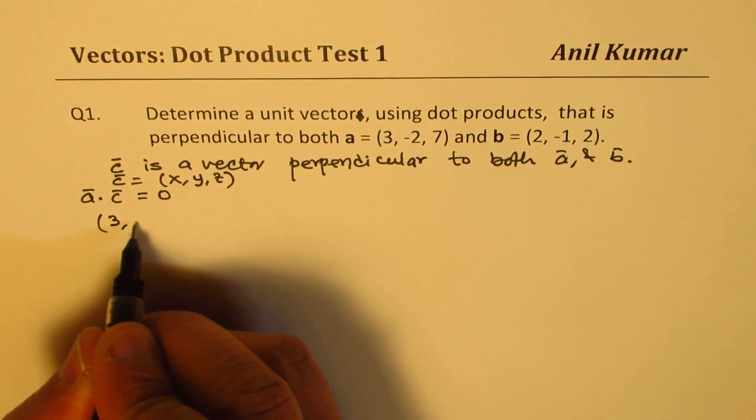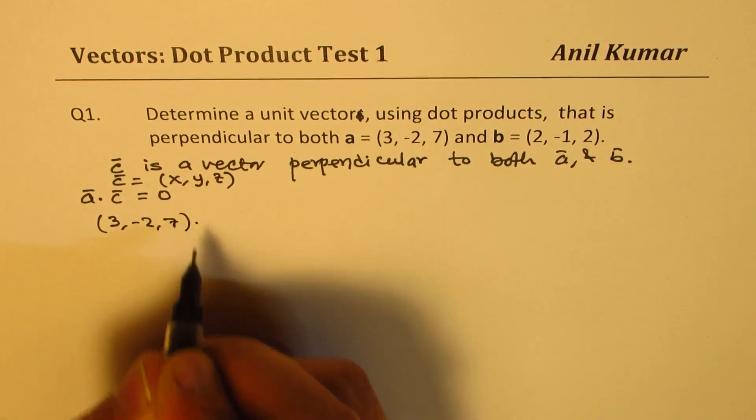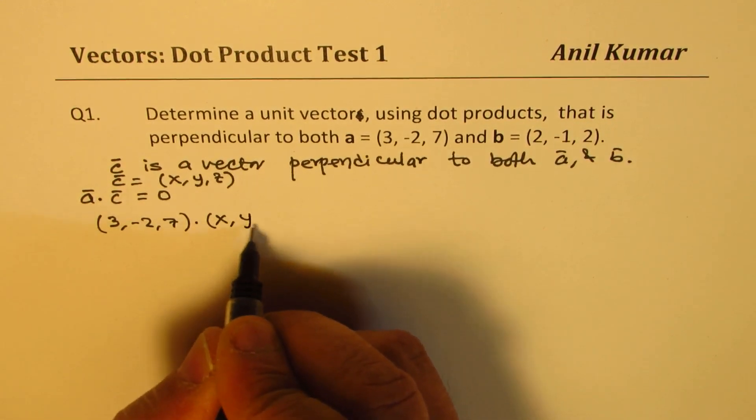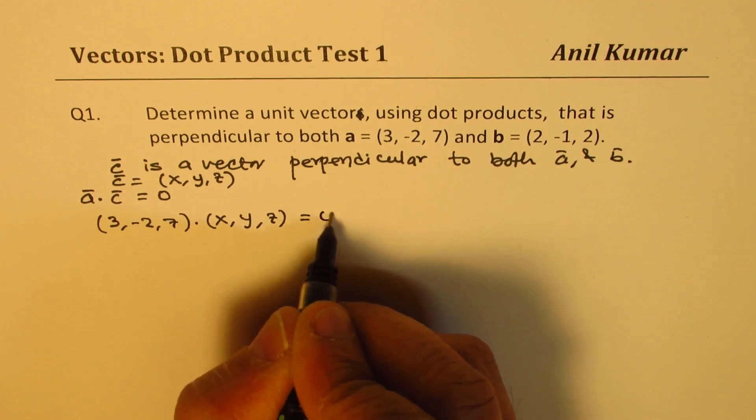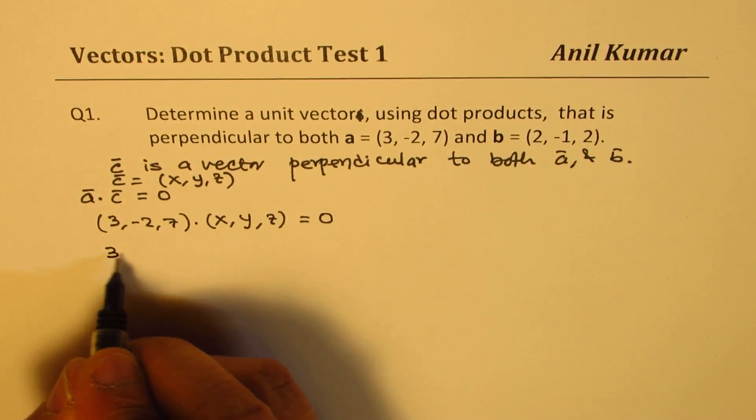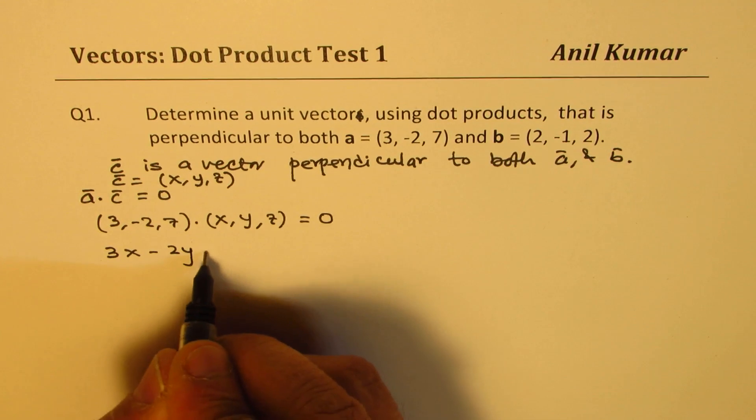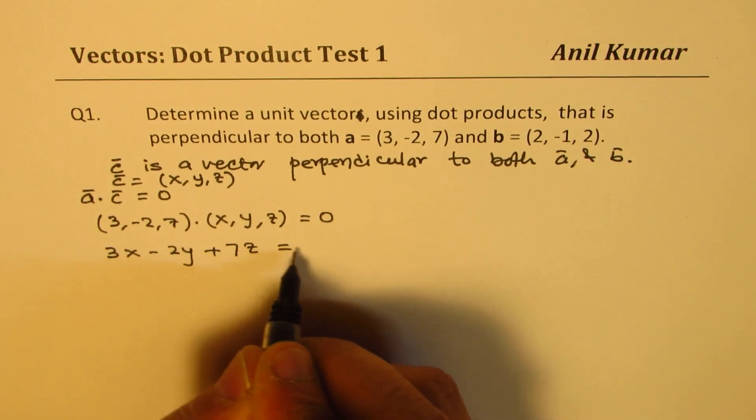That is to say, 3, -2, 7 dot x, y, z equals to 0. So when you do the dot product, you get 3x - 2y + 7z equals to 0.